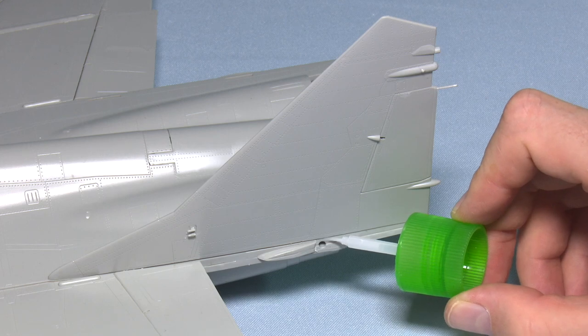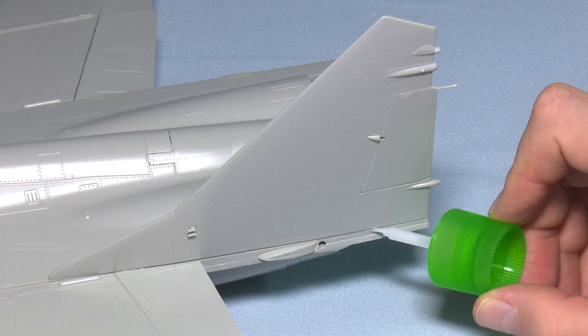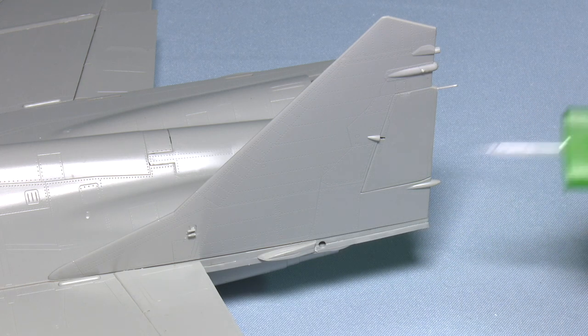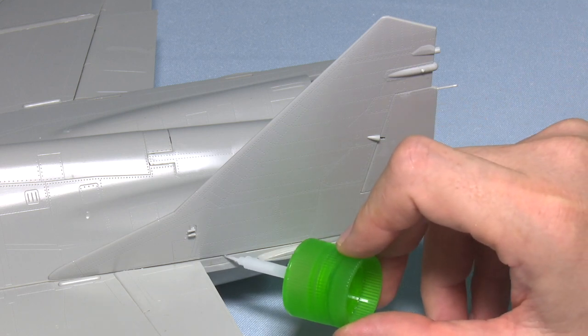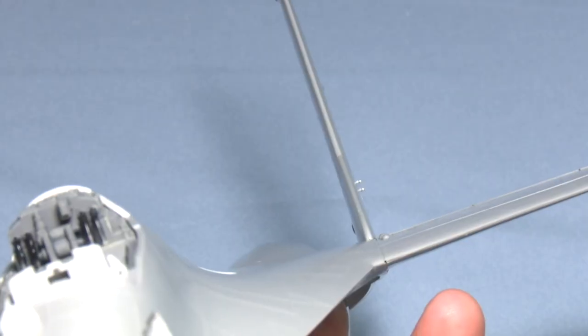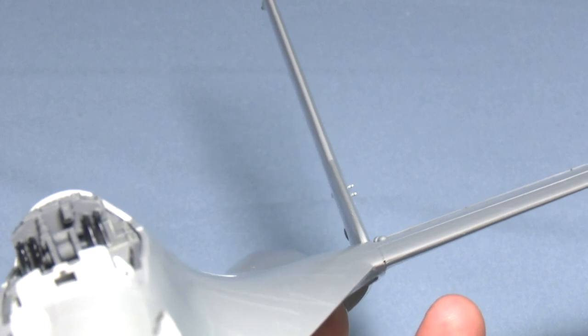So when you add and finalize the glue, make sure that when it actually starts to dry and set, that it sets at the right angle. This is very important. I'm going to make sure that the alignment is correct.